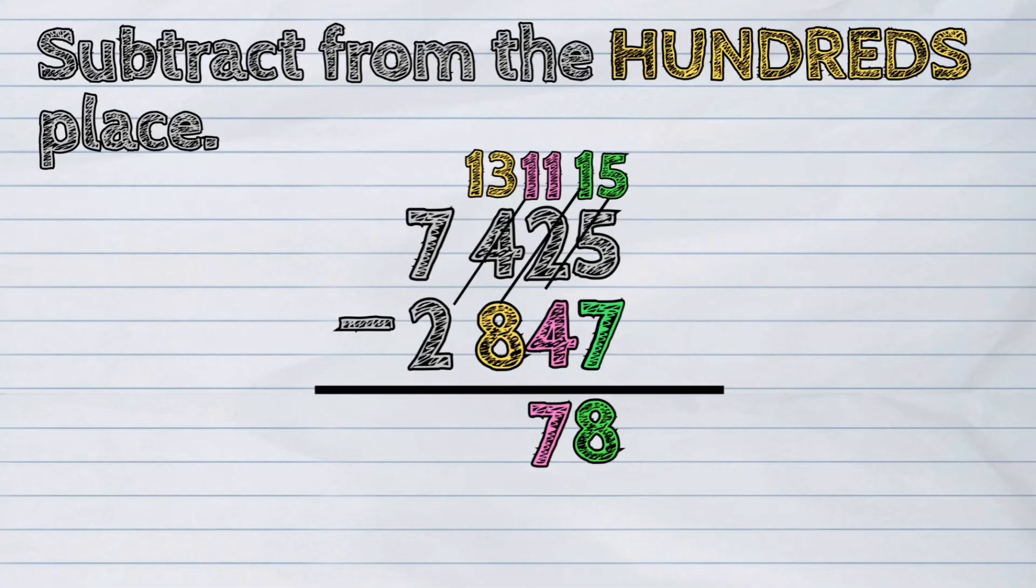Digit seven in the thousands place now becomes six. We will then subtract eight hundreds from thirteen hundreds. The difference is five hundreds.